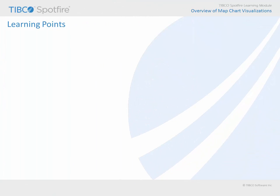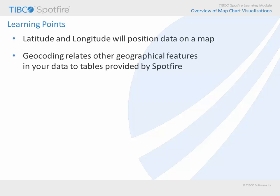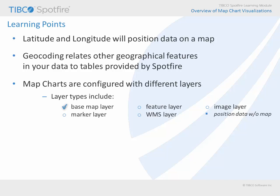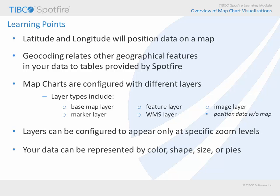From this overview, you should take away several learning points about Spotfire map charts. Data may be positioned on map charts using latitude and longitude coordinates which you provide, or geocoding which relates geographic information from your data table to Spotfire's geocoding data tables. Map charts can be configured with different layers including the base map, marker layers, or feature layers. In addition, information from a web map service or even an image can be configured as a layer in a map chart — in fact, an image may be the only layer, in which case the goal is to represent data upon the image rather than a geographic map. You have seen that each layer can be configured with independent zoom visibility settings, as well as various options for representing data by color, shape, size, or pies. Finally, we touched upon several of the most common methods for navigating within a Spotfire map chart visualization.